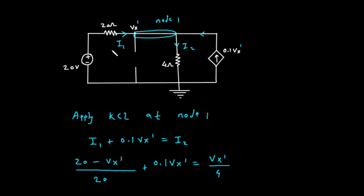Let's call the current flowing from the 20 volt source through the resistor I1. This current enters the node. The dependent current source, with a value of 0.1 Vx prime, also enters the node. The current flowing down through the 4 ohm resistor, let's call it I2, leaves the node. So our KCL equation is: I1 plus 0.1 Vx prime equals I2.